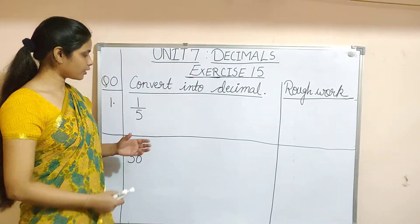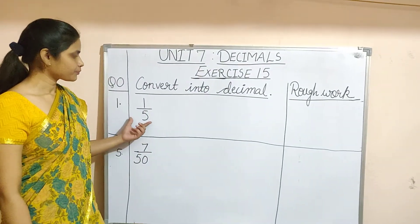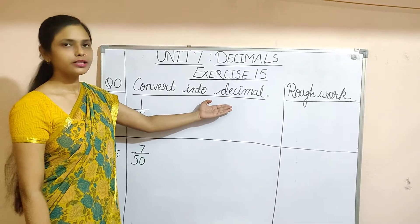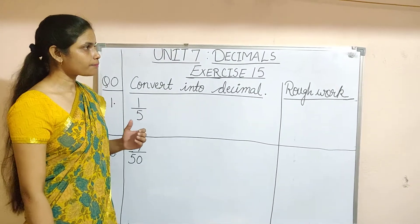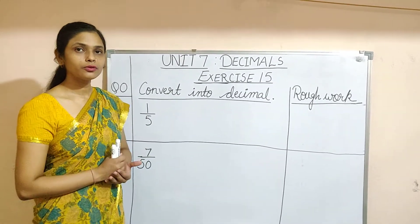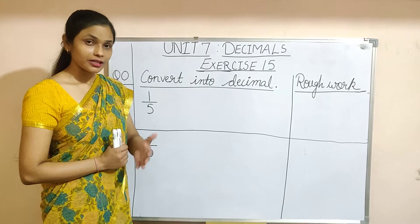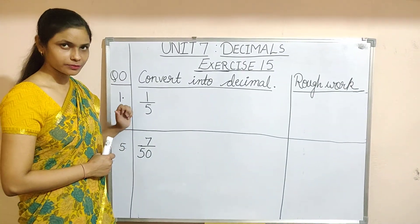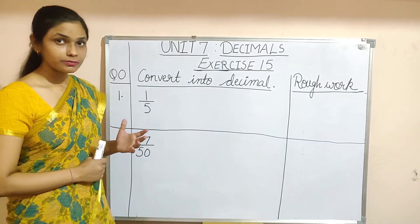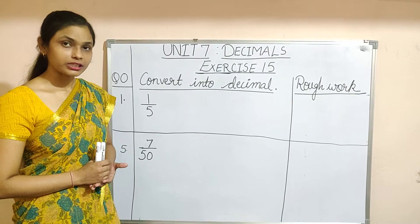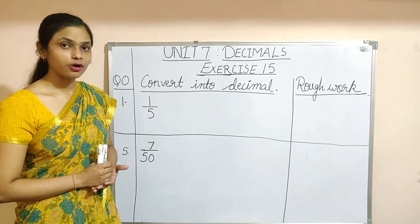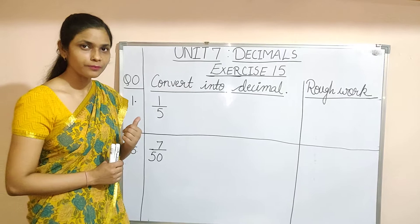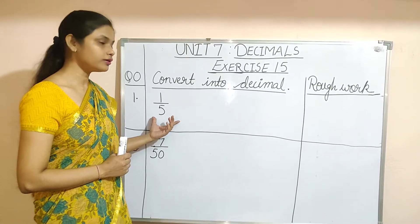Students, let us convert the given fraction into decimal number. Now you already know the decimal fractions — use that decimal fraction to solve this question. Decimal fractions are the fractions that have denominators 10, 100, 1000 and so on. Now, apply the same rule here.